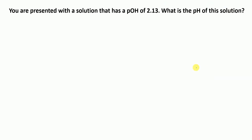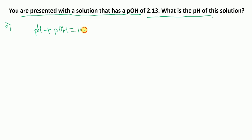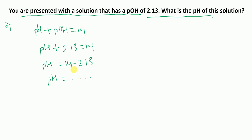Question 1: A solution has a pOH of 2.13. What is the pH? Using pH + pOH = 14, we substitute: pH + 2.13 = 14, so pH = 14 − 2.13 = 11.87. The pH of the solution is 11.87.